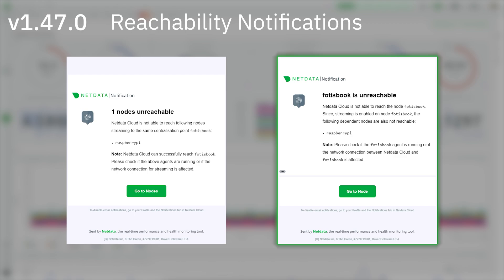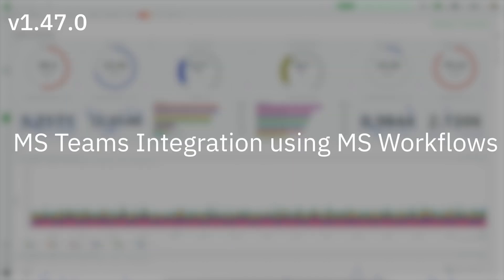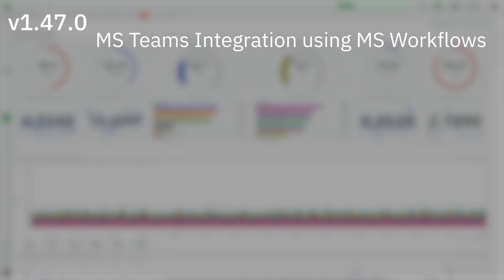The notification includes details of all related nodes that are also unreachable as a result. If individual nodes become unreachable, the associated Netdata parent is referenced to help users check network connectivity issues within their infrastructure.